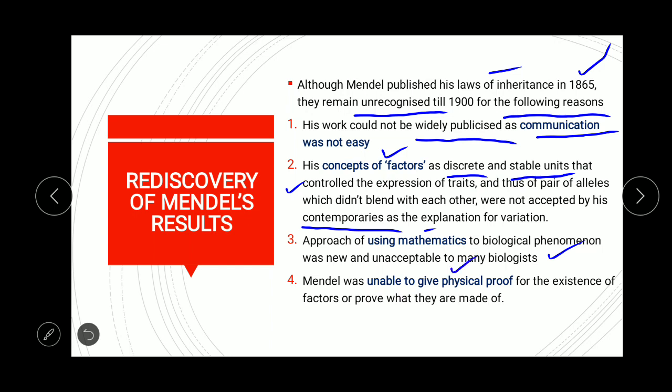The fourth reason was that Mendel was unable to give any physical proof for the existence of the factors. Although he stated that factors control the traits of various characters in the plant, he was not able to provide any physical proof such as microscope images, slides, or pictures. For these four reasons he was not recognized in the scientific society.